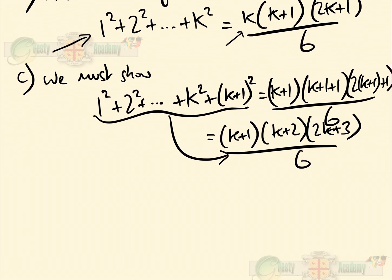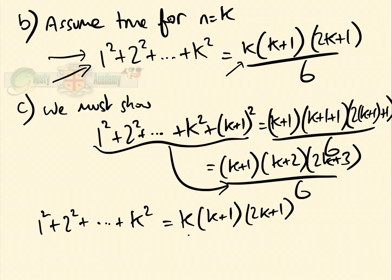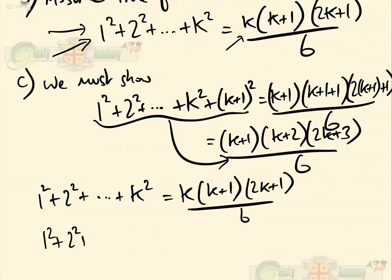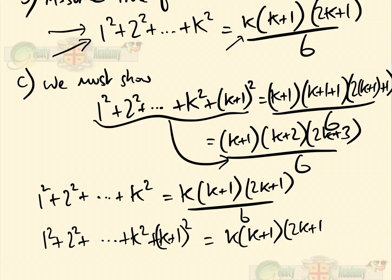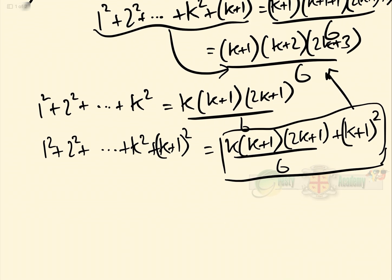So how do we do that? We've assumed it's true for n equals k, so we have 1² + 2² + ... + k² = k(k+1)(2k+1) over 6. Therefore we know that 1² + 2² + ... + k² + (k+1)² equals k(k+1)(2k+1) over 6, plus (k+1)². All we've done is added (k+1)² to both sides. We now have to show this is identical to our target expression, in order to prove that if it's true for n equals k, then it's true for n equals k plus 1.